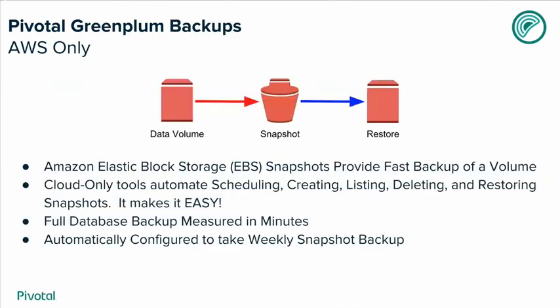Another feature leveraged in Amazon is the snapshot feature of EBS storage. EBS — Elastic Block Storage — is our recommended method for storage in Amazon. Snapshots let you take a picture of the data volume, and we've created a tool to manage the creation, scheduling, listing, deleting, and restoring of snapshots. You don't have to worry about 60-plus volume snapshots; you can just run one command, get a snapshot ID, and restore to that snapshot. It's also automatically configured to take weekly snapshots and keep a rolling copy of four snapshots.